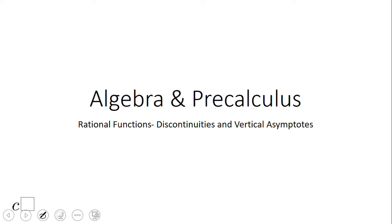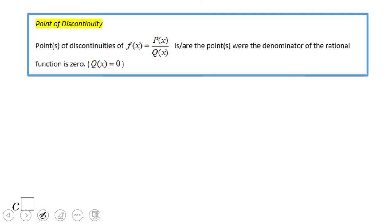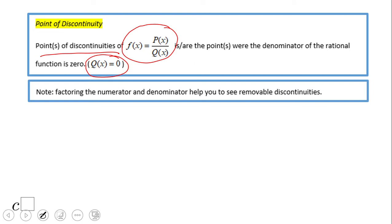Welcome back to C-Score. In this video clip we're going to take a look at rational function discontinuity and vertical asymptotes. A rational function is a quotient — a fraction of two polynomials. To find the points of discontinuities, we set the denominator — the bottom of the fraction — equal to zero. When looking for removable discontinuity, you need to factor out first. Always think about factoring when you have a rational function, and see if it can be simplified. If you can simplify, you have what we call a removable discontinuity.